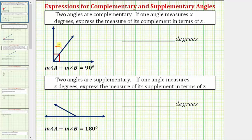So this angle and this angle are complementary. If one angle measures x degrees — let's say this angle here measures x degrees — we're asked to express the measure of its complement in terms of x. Well, the complement would be this angle here, and because the sum of the measures equals 90 degrees, this angle must be equal to 90 minus x degrees.